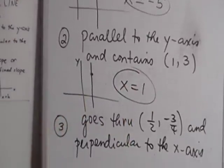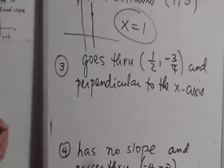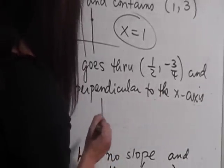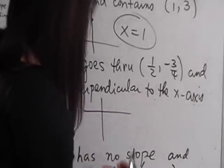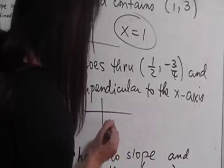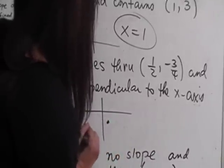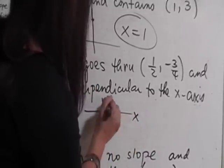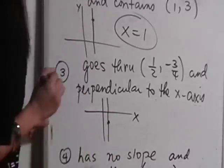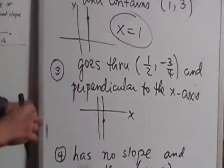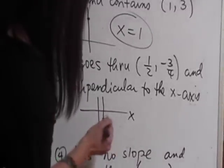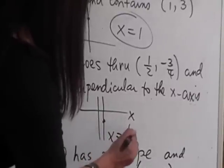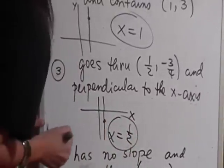For the third problem, I have a line that goes through the point 1 half, negative 3 fourths. That point is somewhere here, and I want it to be perpendicular to the x-axis. I draw a line perpendicular to the x-axis, and you see that I get a vertical line that goes through the x-intercept 1 half. So this line will have equation x equals 1 half.